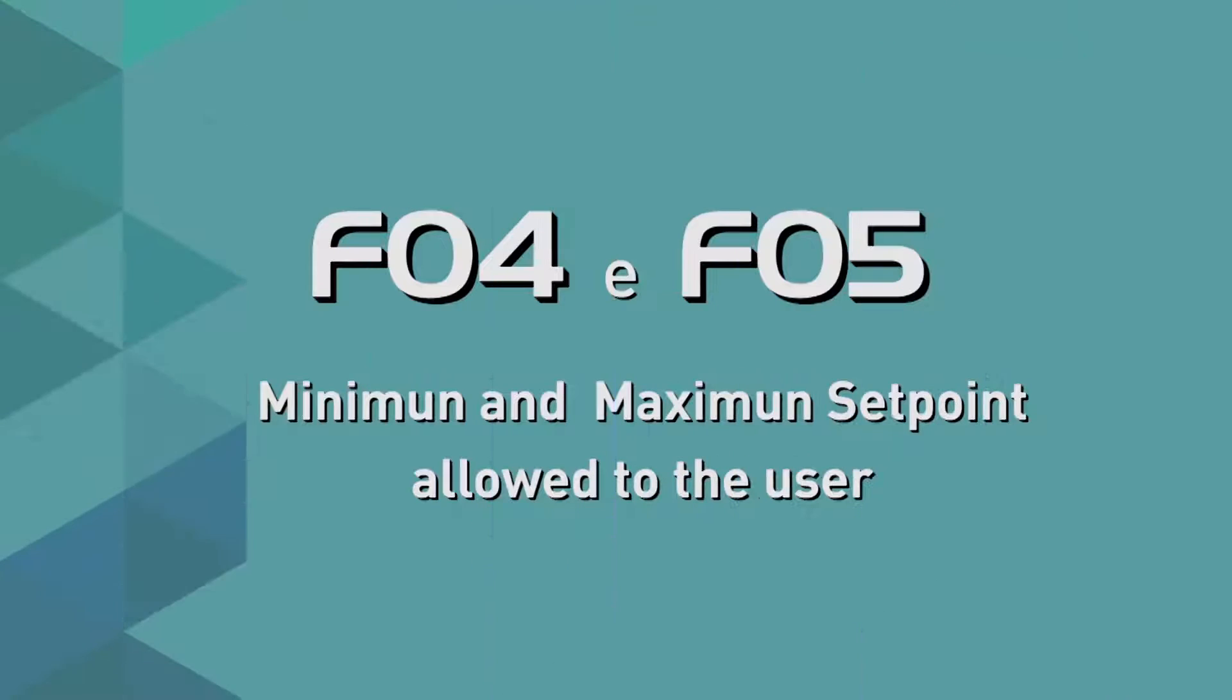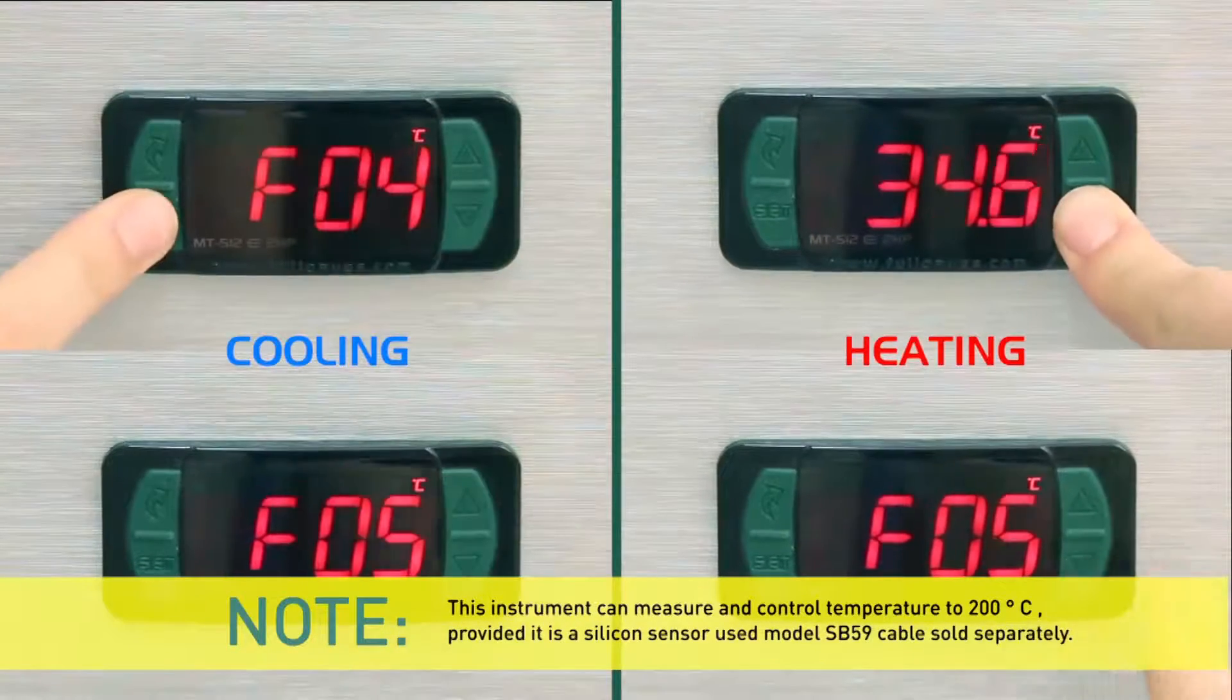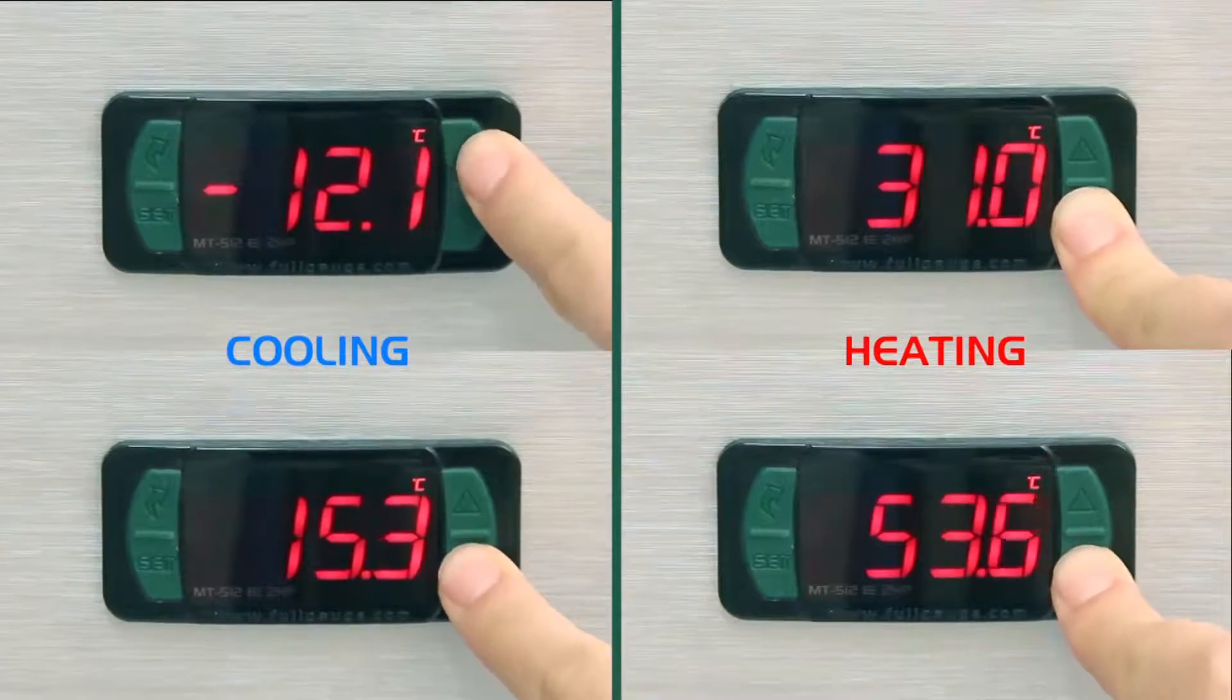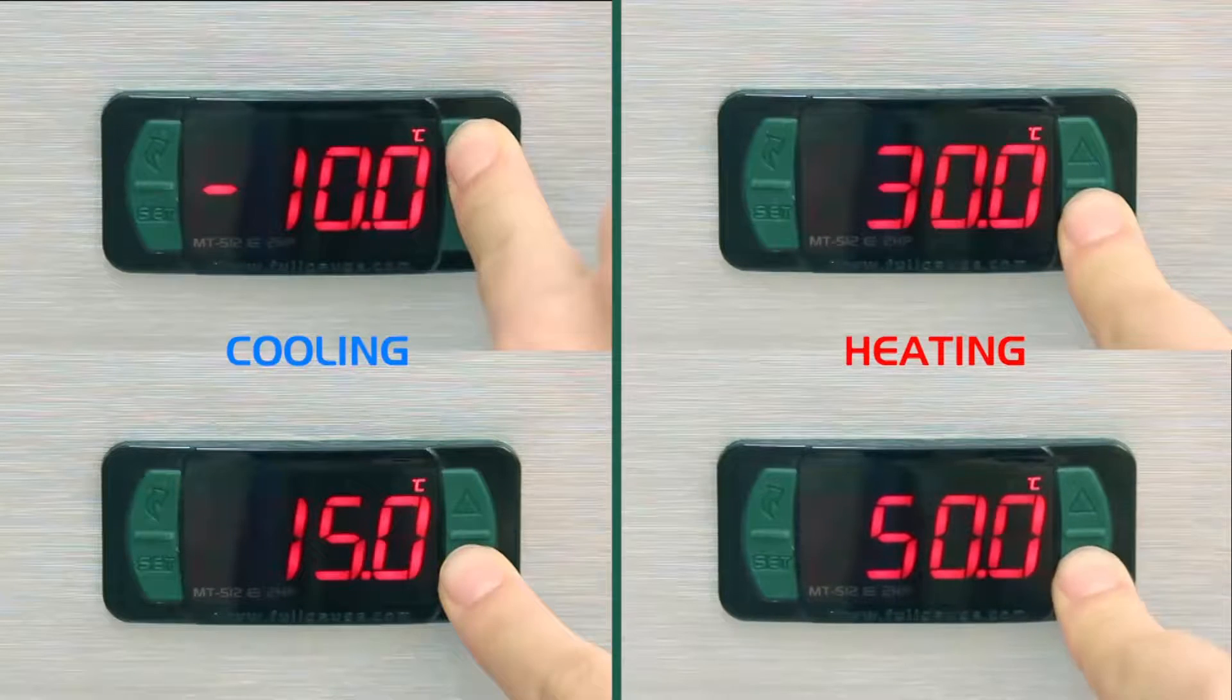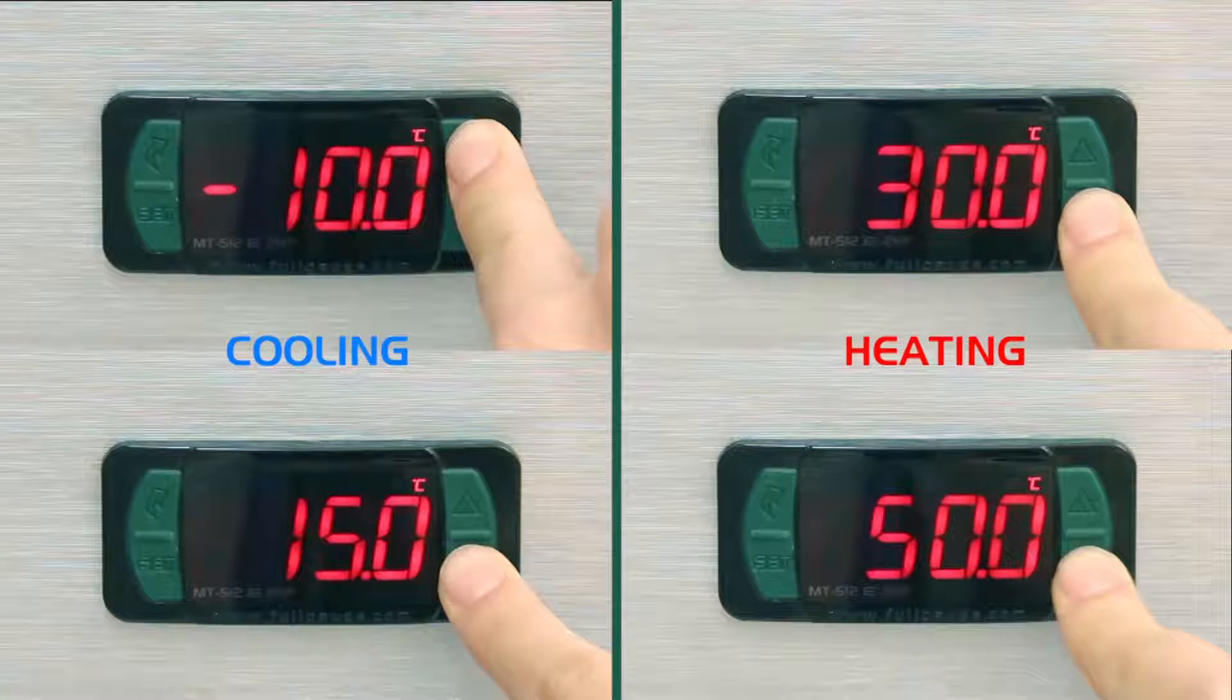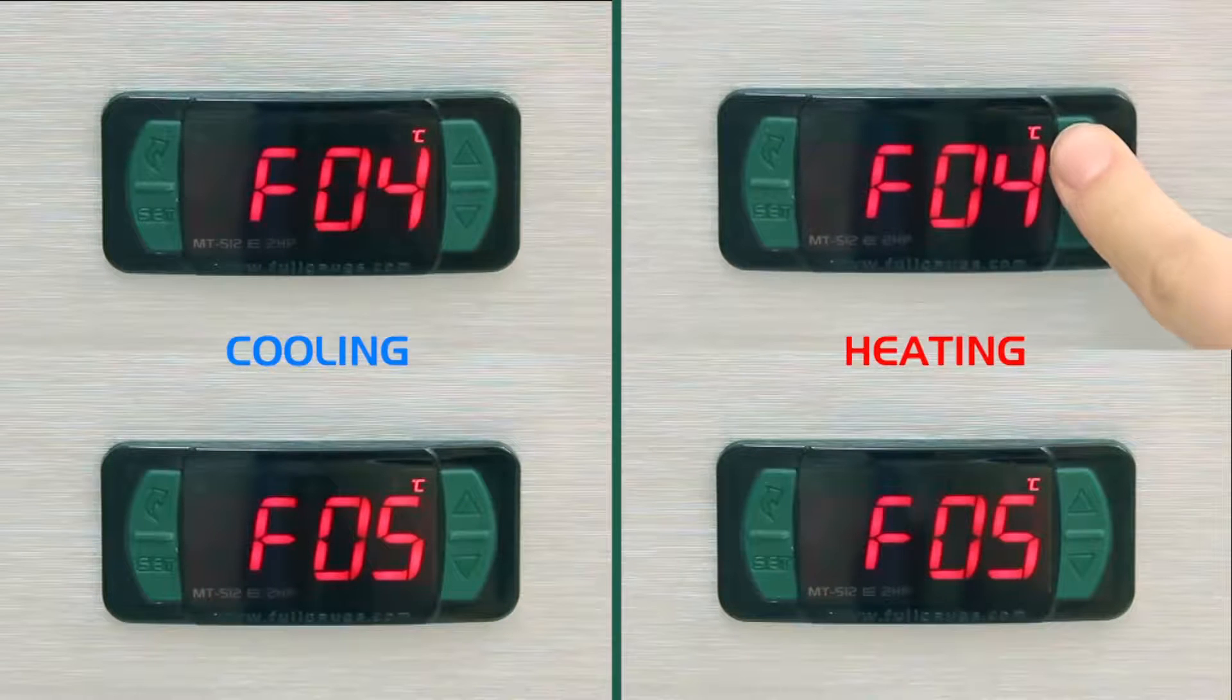F04 and F05. Minimum and maximum set point allowed to user. The MT512E2HP controller can control temperatures within a range of minus 50 to 105 degrees Celsius. In the examples, we limit this range to minus 10 to plus 15 degrees Celsius in cooling and 30 to 50 degrees Celsius in heating. These limits, or electronic stops, restrict the range released to adjust the set point, seeking protection and security.